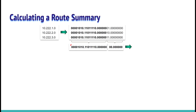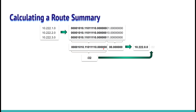Then we calculate the decimal representation — it's going to be 10.22.0.0. And we count the matching bits, which comes to 22. So 22 is going to be our mask, giving us the summary route 10.22.0.0/22.